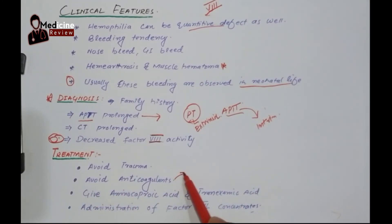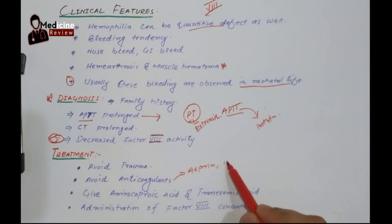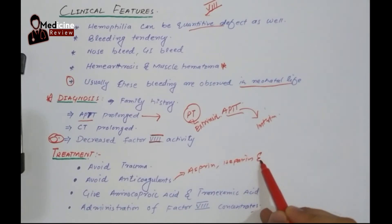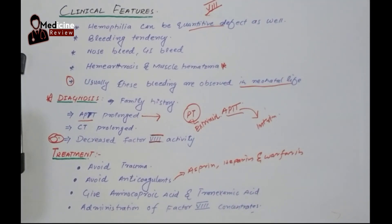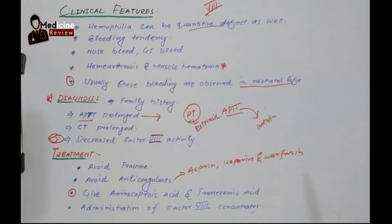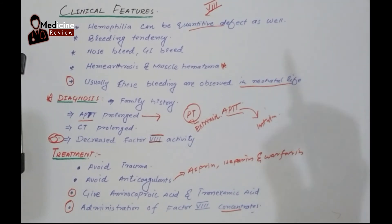Avoid anticoagulants such as aspirin, heparin, and warfarin, because the blood is already not coagulating, and giving these on top would be very harmful. For acute bleeding, give aminocaproic acid and tranexamic acid — this can provide transient relief and stop the bleeding temporarily. But the treatment of choice is administration of factor 8 concentrate, whether from blood, fresh frozen plasma, or cryoprecipitate. Factor 8 is what is required here.